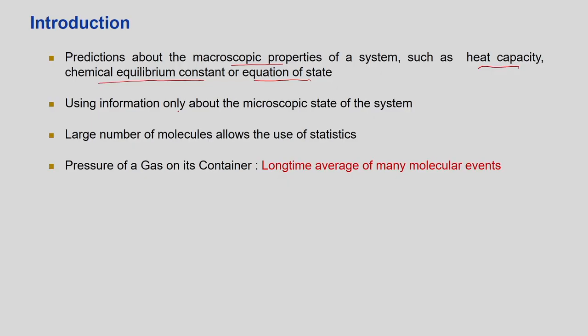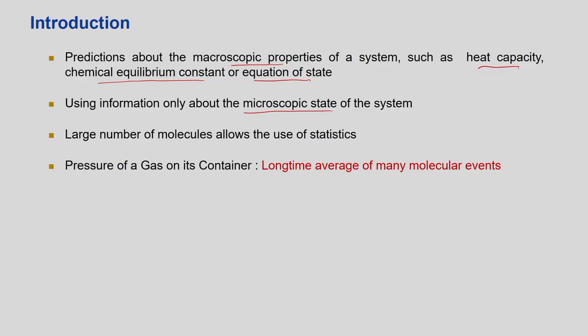Where does this information come from? It comes from the microscopic state of the system. When I talk of a microscopic state, it means the position or velocity of each molecule. The position and velocity of each molecule determines the macroscopic state — or the average property. When we talk about microscopic states, we talk about a large number of molecules. For air, we have nitrogen and oxygen molecules moving in different directions and colliding with each other.